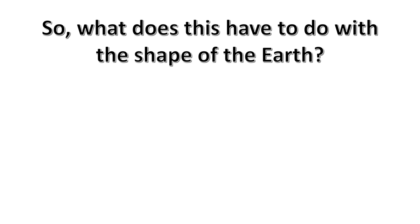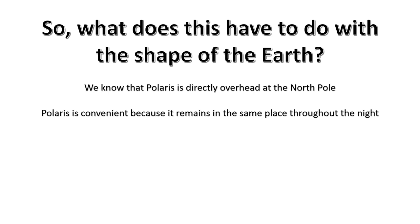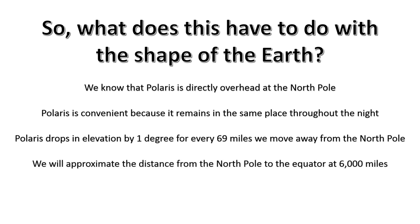So what does this have to do with the shape of the Earth? Well, certain things we know. We know that Polaris is directly overhead at the North Pole. Polaris is a convenient star to use — we could use any star — but Polaris is good because it remains in pretty much the same place throughout the night, within less than half a degree. Polaris drops in elevation by one degree for every 69 miles we move away from the North Pole. This has been known for centuries, if not millennia. For the purposes of this experiment, we're going to approximate the distance from the North Pole to the equator at 6,000 miles — it's actually about 6,215.